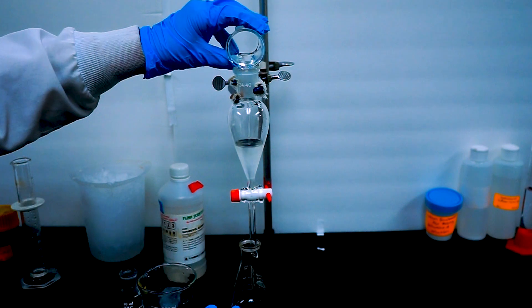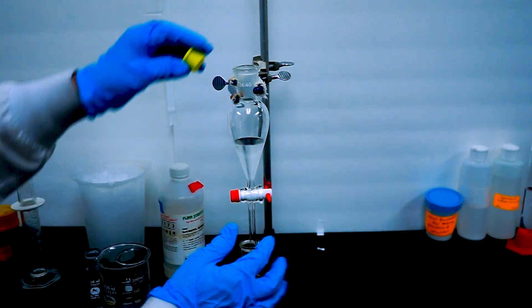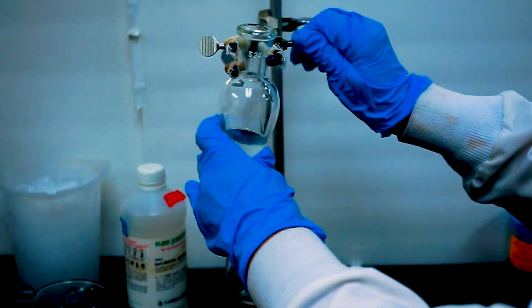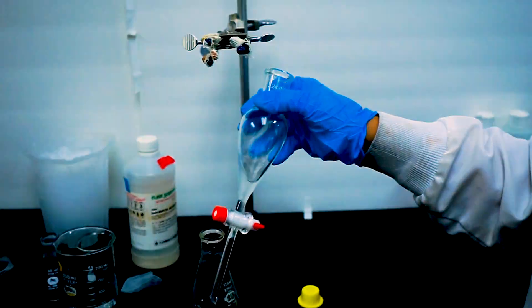Be sure to cover with parafilm, as it can be volatile. Cap the flask. First, the flask will be gently swirled for about 5 minutes. Be sure to remove the cap periodically to allow the flask to vent.